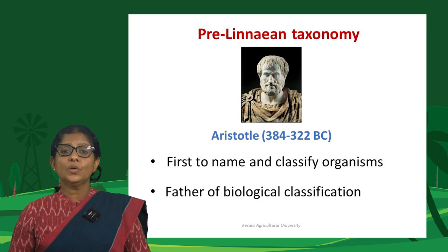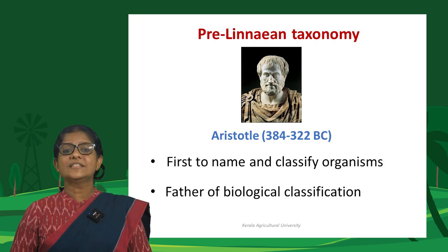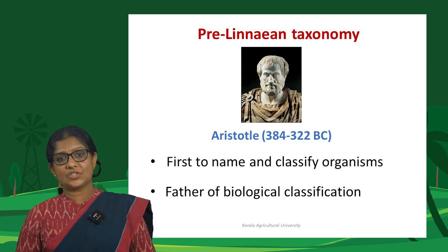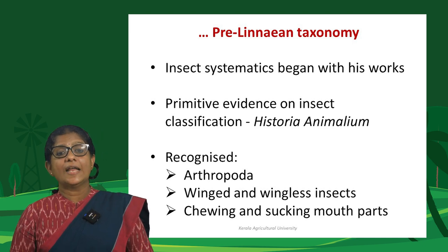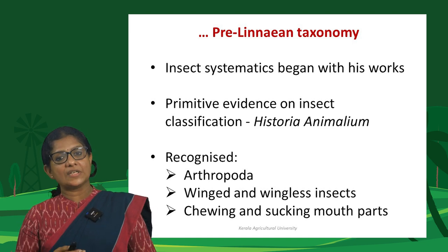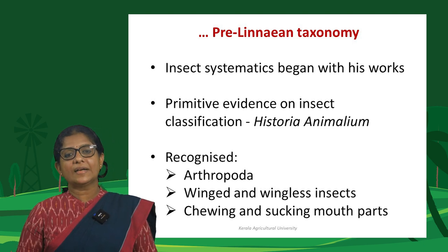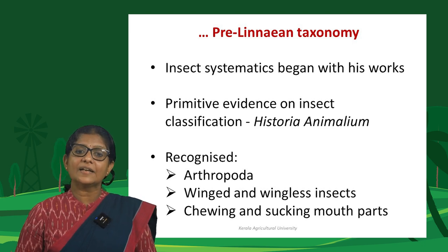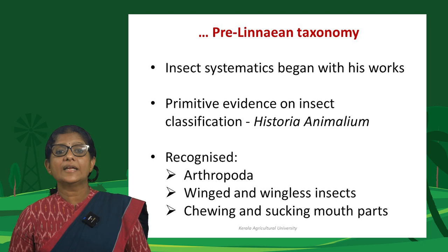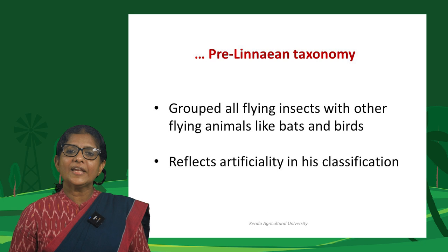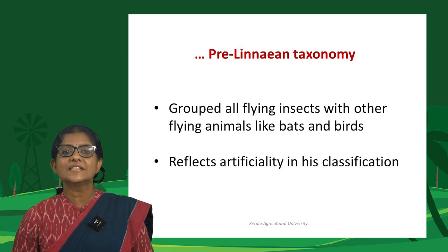Aristotle was the first person to name and classify organisms, and is rightly regarded as the father of biological classification. Insect systematics is considered to have begun with Aristotle's works, and much early evidence on insect classification comes from his book Historia Animalium. In it, he recognized the group Arthropoda, distinguished winged and wingless insects, and identified two basic types of mouthparts — chewing and sucking. However, he grouped all flying insects with flying animals like bats and birds, reflecting the artificiality of his classification.